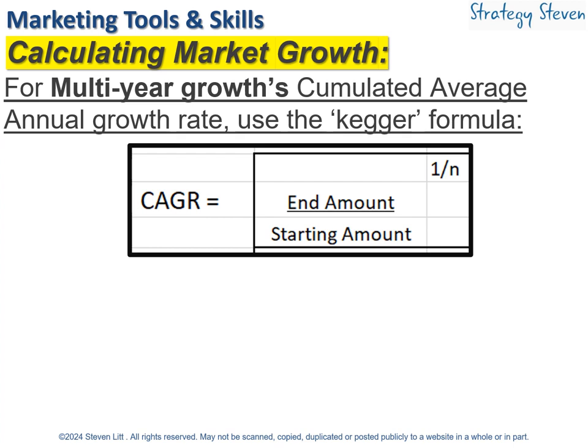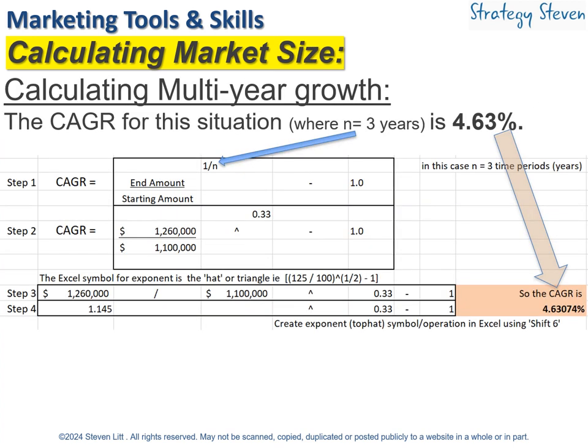In fact, the CAGR formula uses a rather unusual format: the ending market amount divided by the starting market amount, raised to an exponent. Very rarely do we use exponents in marketing math, but this is one — the exponent is 1 over n, where n is the number of years. So in this case, with a three-year projection, 1.26 million divided by 1.1 million is raised to an exponent of 1 over 3, which is one-third or 0.33.